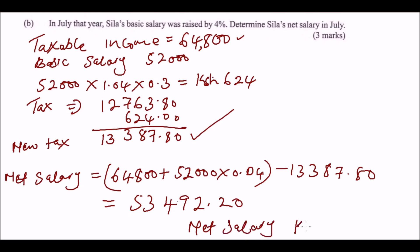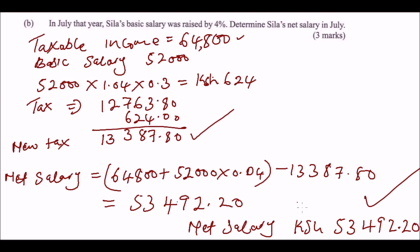So the net salary is fifty-three thousand four hundred and ninety-two and twenty cents in Kenyan shillings. That is the amount deposited in his bank after all deductions. That brings us to the end of the question. This is Form Three income tax, covering calculation of tax brackets.